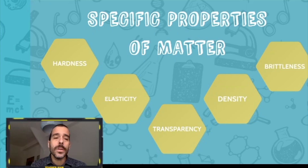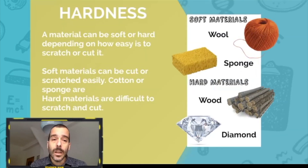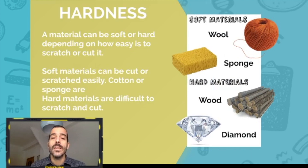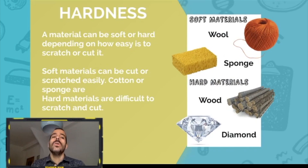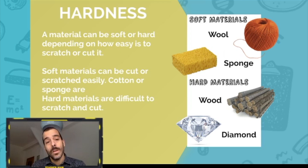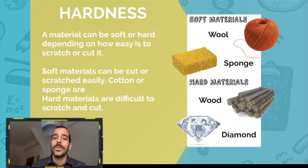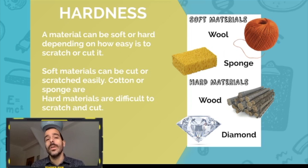We are going to start with hardness. A material can be soft or hard depending on how easy it is to scratch or cut it. Soft materials can be cut or scratched very easily — cotton or sponge are examples. Here you see a wool sponge and cotton — these are soft materials that are easy to cut or scratch.